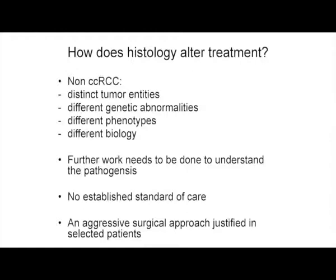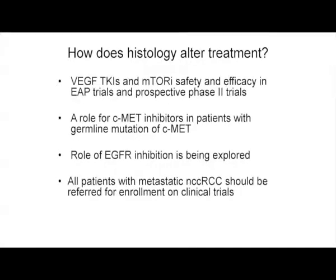In summary, non-clear cell renal cancers are distinct tumor entities with different genetic abnormalities, different phenotypes, and different biology. There is no established standard of care, and in some cases an aggressive surgical approach is justified. VEGF TKIs and mTOR inhibitors have shown safety and efficacy in extended access protocols and prospective phase 2 trials. There is a role for CMET inhibitors in patients with germline mutation of CMET. The role of EGFR inhibitors is being explored, and all patients with metastatic non-clear cell carcinoma should be referred for enrollment on clinical trials.